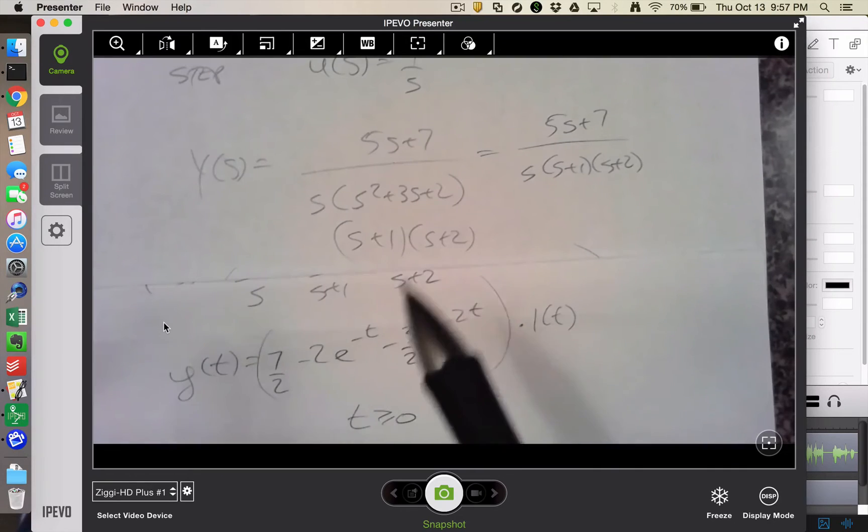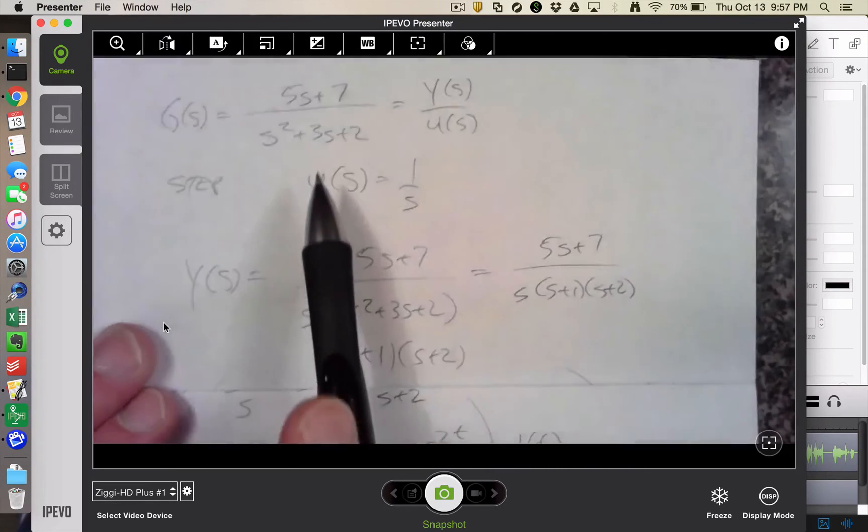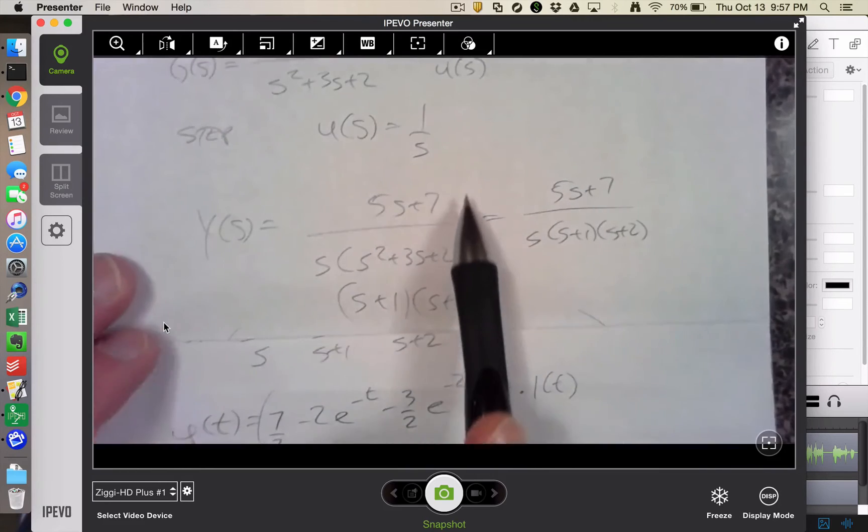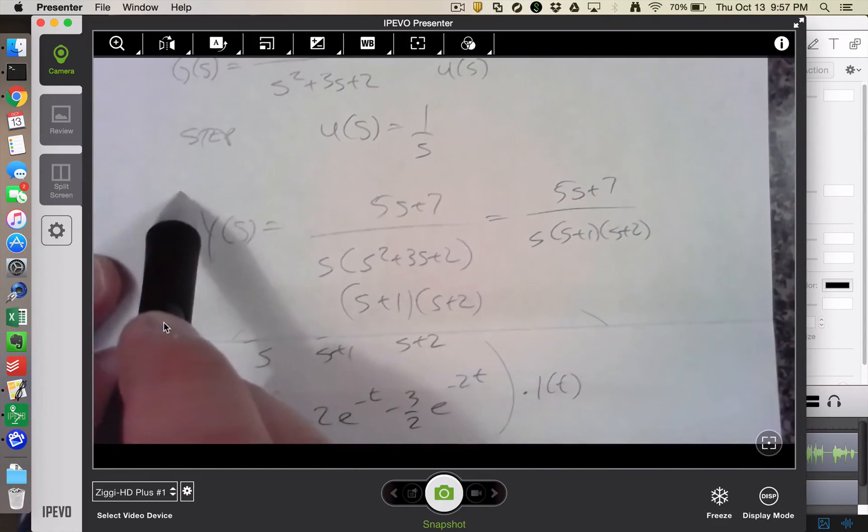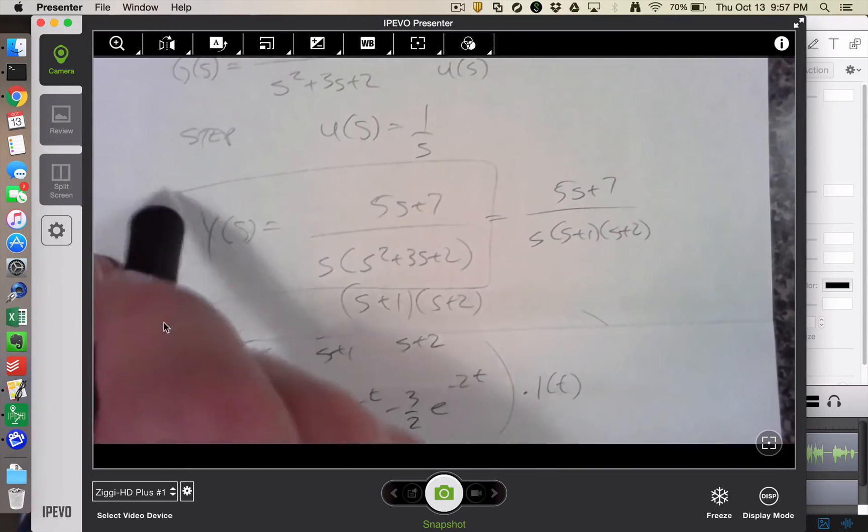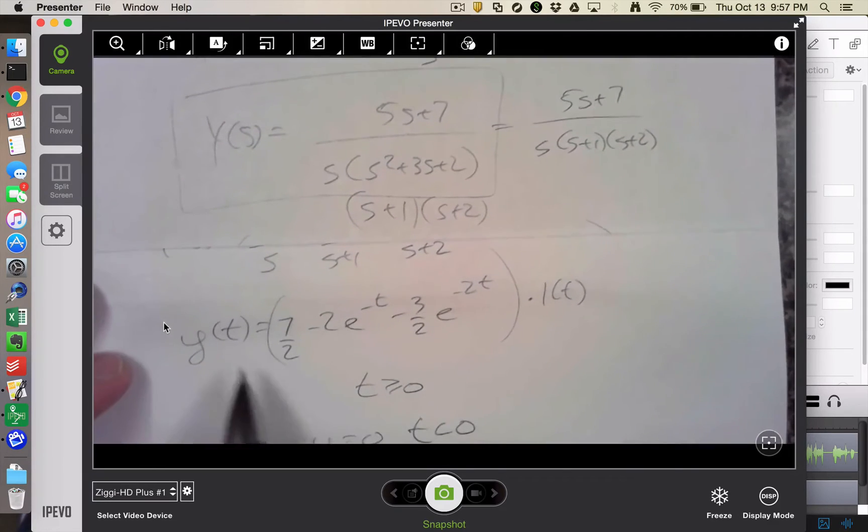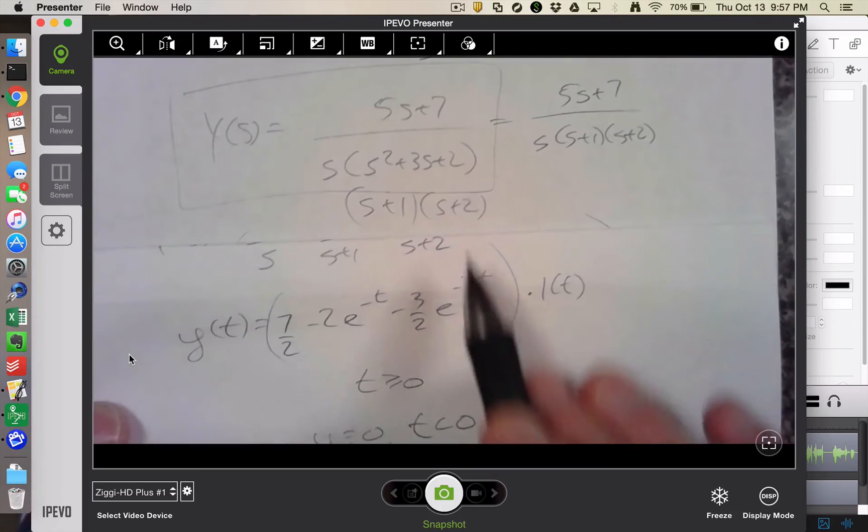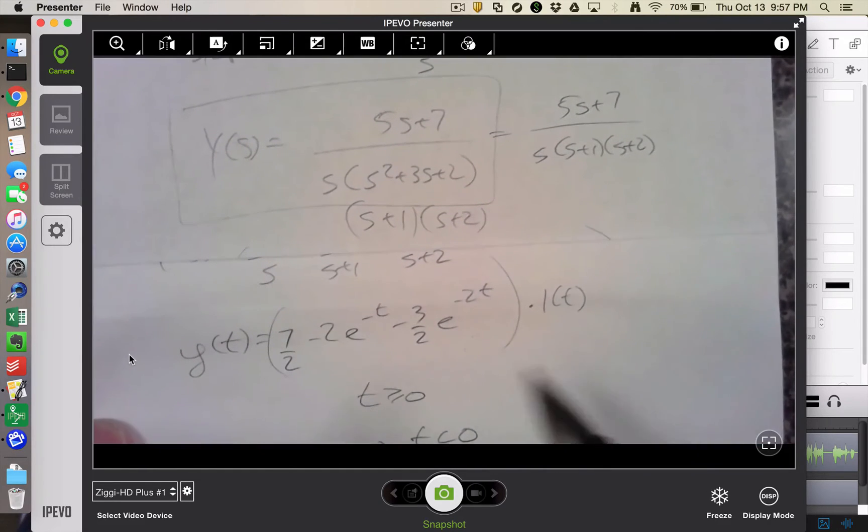The question I'm trying to answer is that if I have this transfer function and I assume a step input, so I ultimately have this y of s here, I'm claiming that this is the correct partial fraction expansion and then inverse Laplace. Can I use the python control module to verify that that is in fact the inverse Laplace of that?